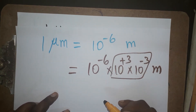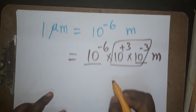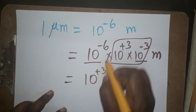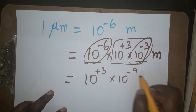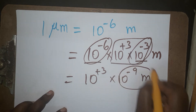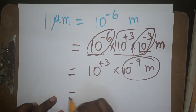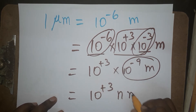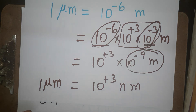10 power minus 6 and 10 power minus 3 taken together give 10 power minus 9 meter, which we call a nanometer. So 10 power plus 3 nanometers is equal to 1 micrometer.